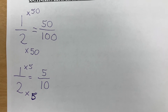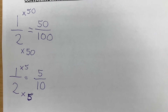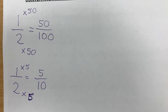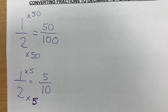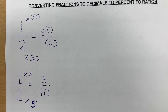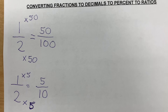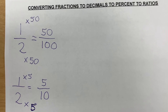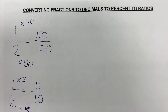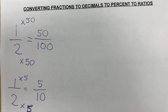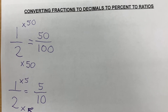So to get one half to something over 100, we need to multiply it by 50, right? 2 times 50 is 100. So the numerator, like always, has to also be multiplied by 50. So 1 times 50 is 50.